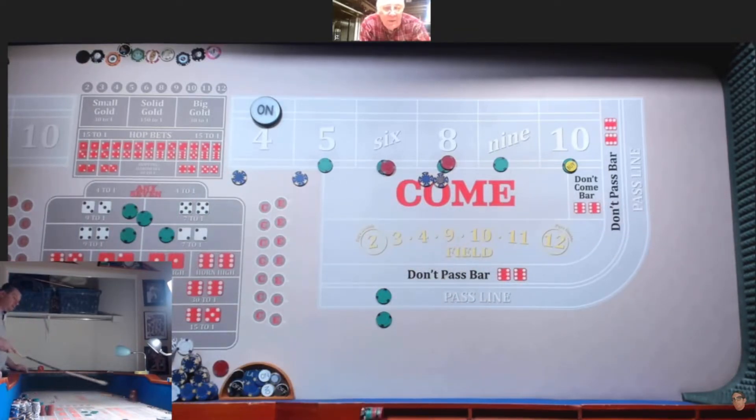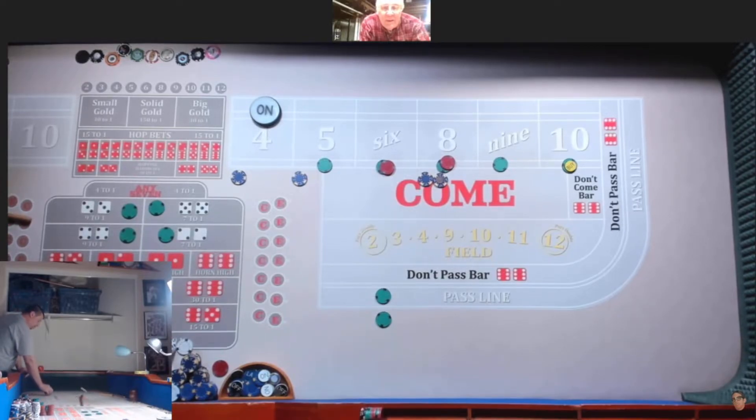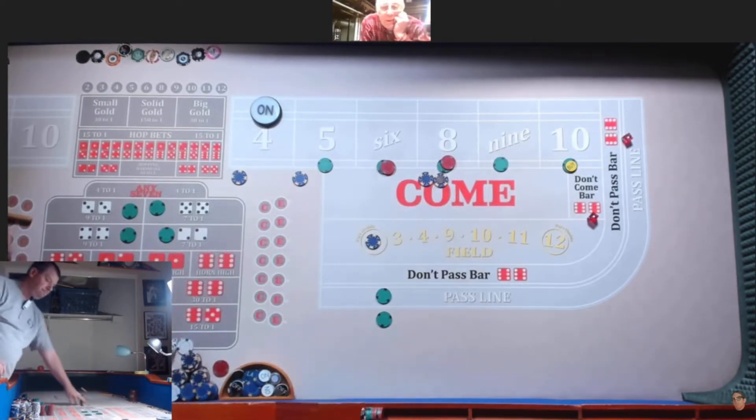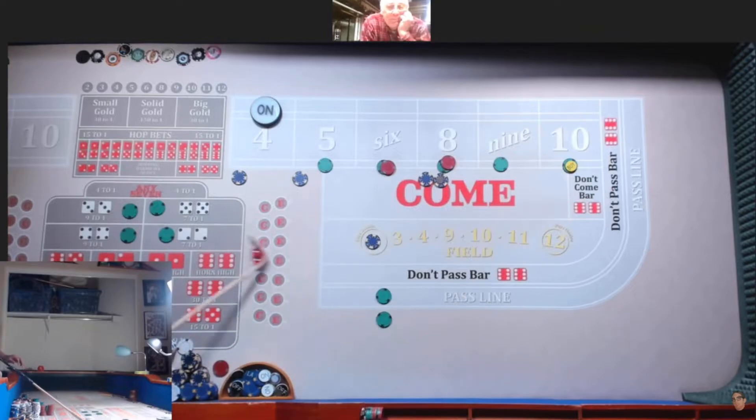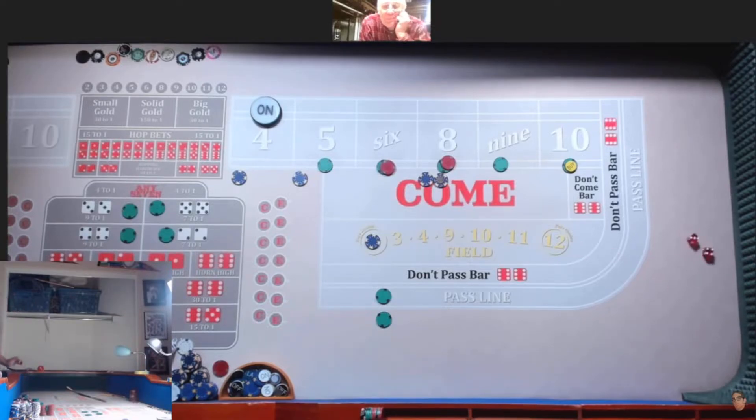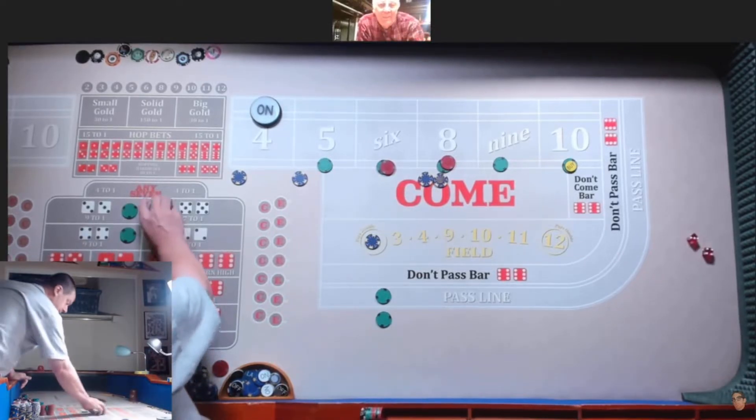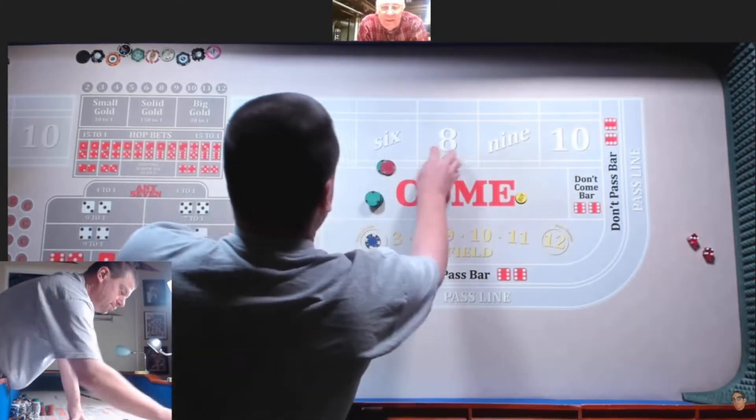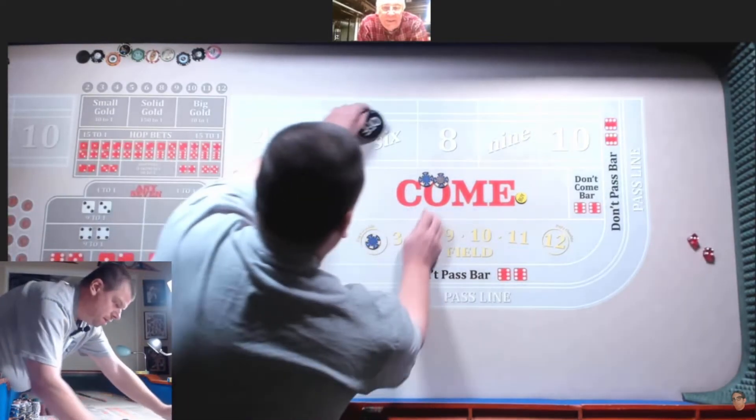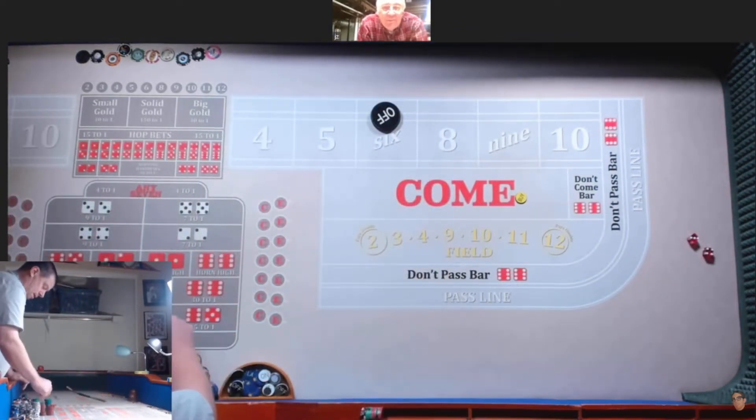I don't need the field. We'll get a six. All right, we can go. I don't need the field. Same bet. We got a seven. You got to be kidding me. I can't even get an average roll. That was six rolls.